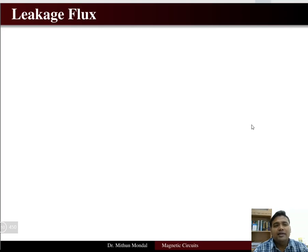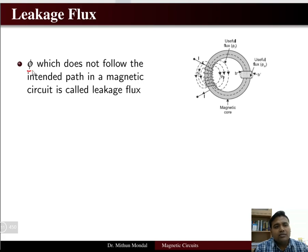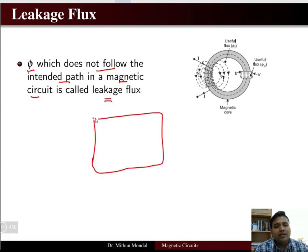Welcome to the next lecture on magnetic circuits. We were discussing series and parallel magnetic circuits in the previous class, where we took only the main flux and did not account for any leakage flux in the iron path. Today's topic of discussion will be leakage flux. Any amount of flux which does not flow through the intended path in a magnetic circuit is called the leakage flux.